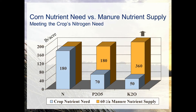At a manure application rate of 60 tons per acre, the crop nutrient need for nitrogen, phosphorus, and potassium is shown in blue bars, and the nutrients applied by manure in gold bars. Following a nitrogen strategy, we meet the nitrogen needs of the corn but over-apply phosphorus and potassium. With phosphorus, following this strategy over a few years won't draw down phosphorus over the rotation — we will start building up soil test phosphorus levels.